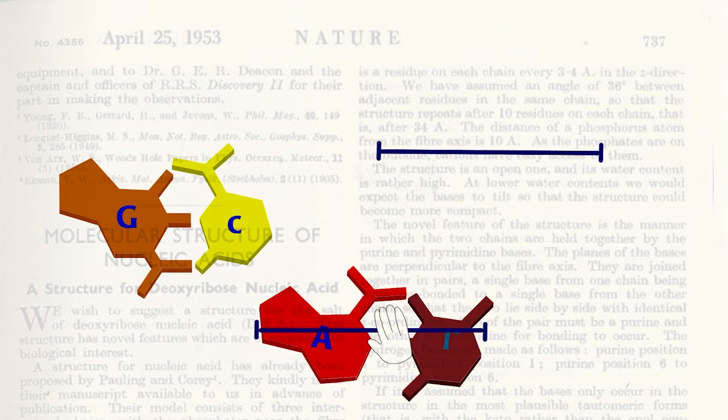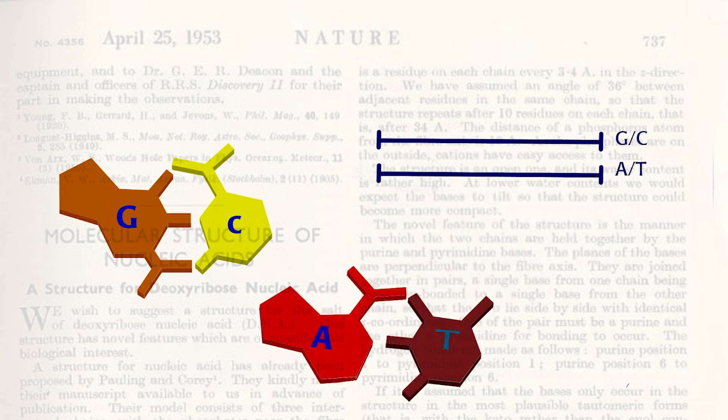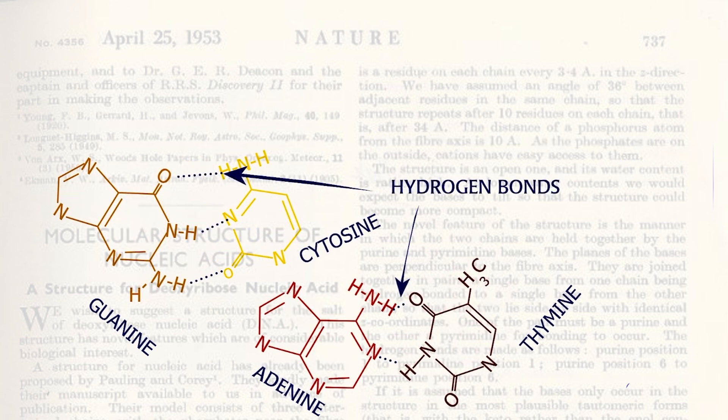This base pairing agreed with Chargaff's ratios and allowed the bases to compactly stack on top of one another. Guanine makes three hydrogen bonds with cytosine, and adenine makes two hydrogen bonds with thymine. James became convinced that base pairing was the key to DNA structure.